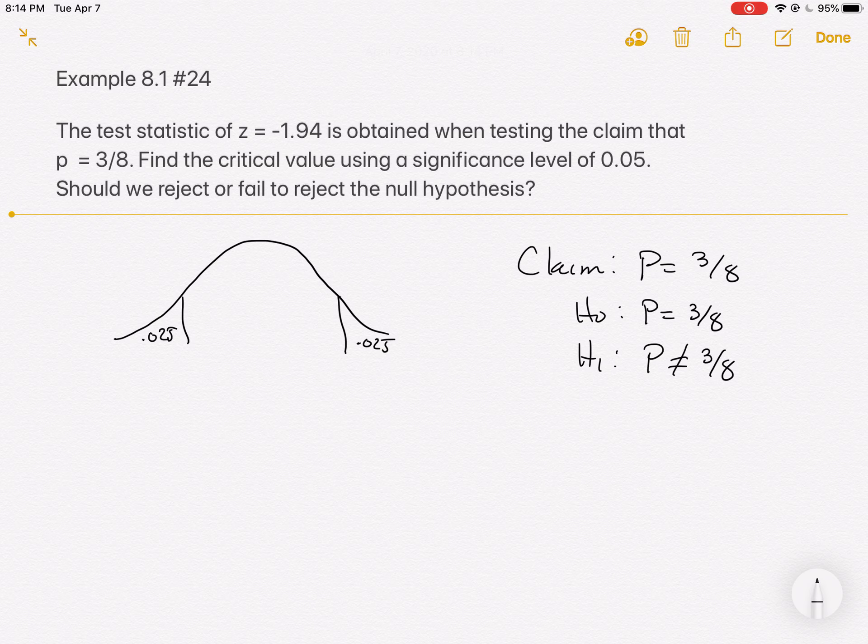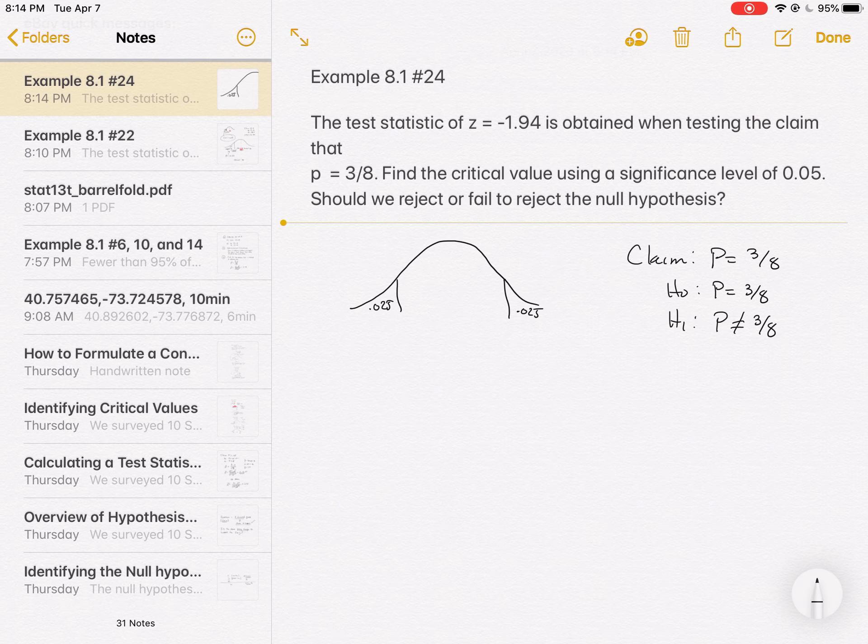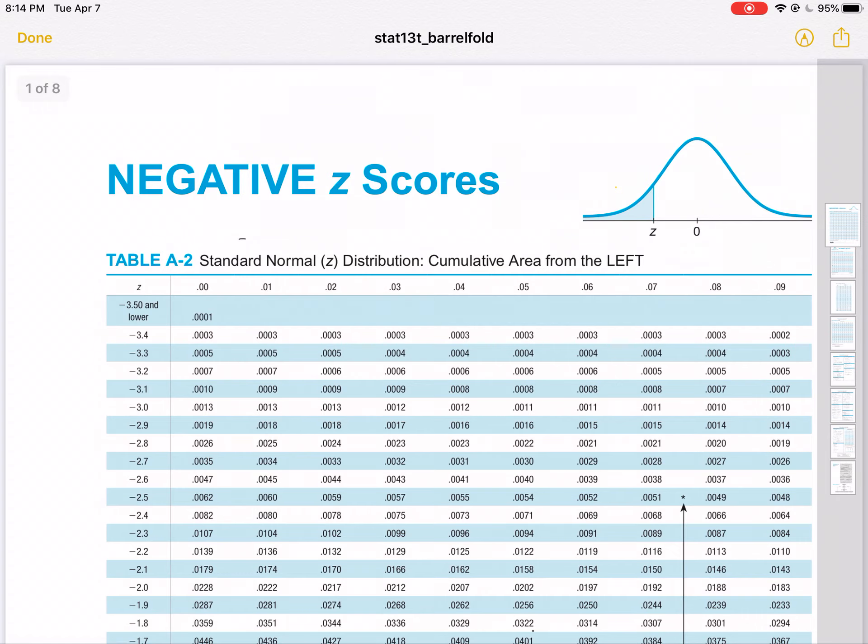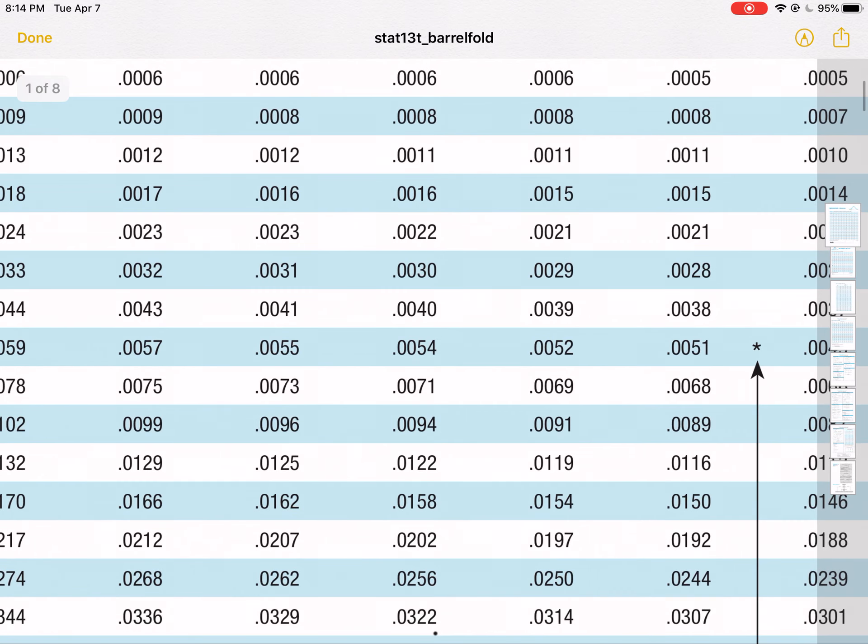We have two tails because the alternate hypothesis can be true in either direction. So we're looking for this 0.025. Let's go look it up in our charts. I'll pull that one up again, and we'll go look for the 0.025.